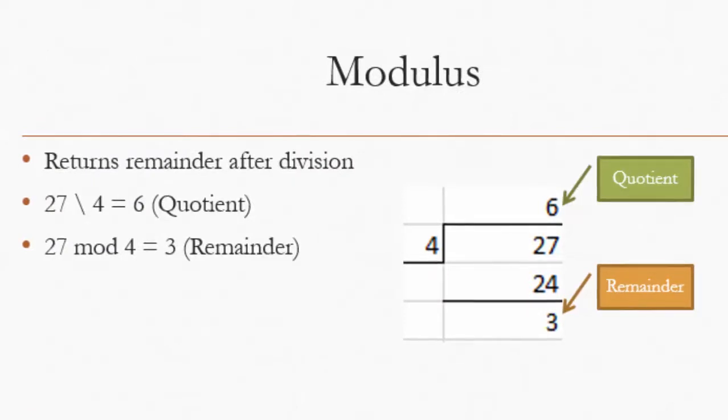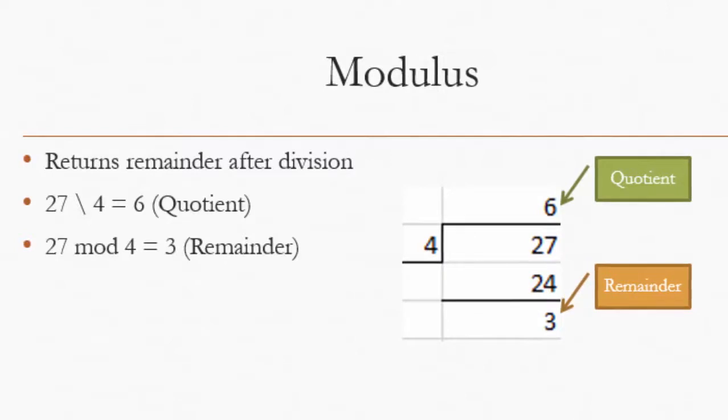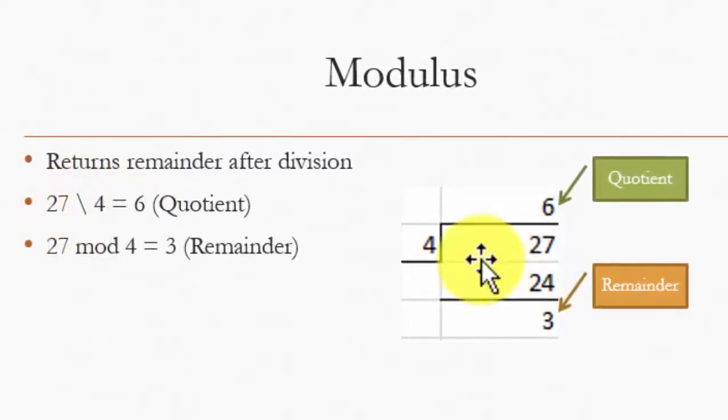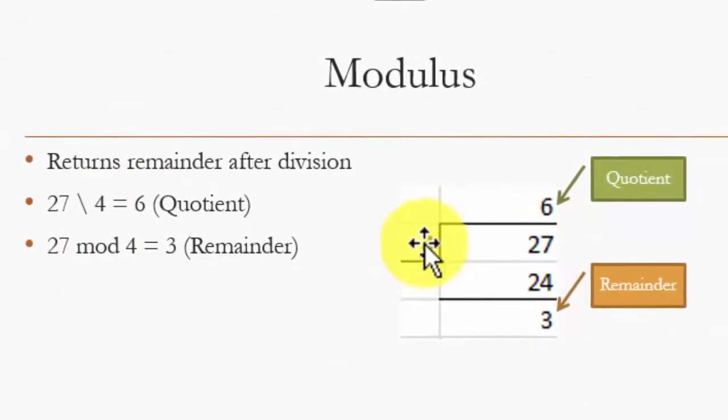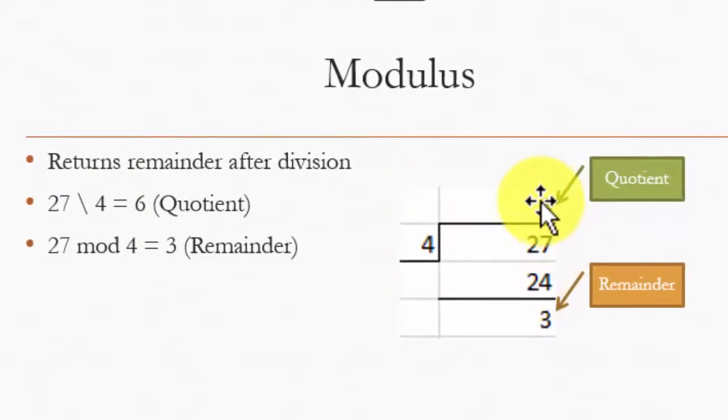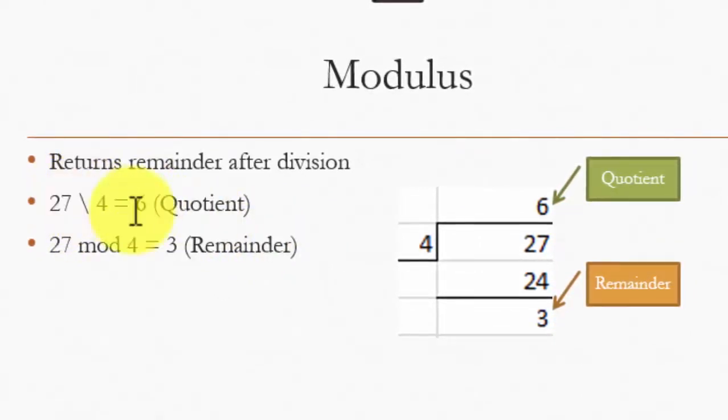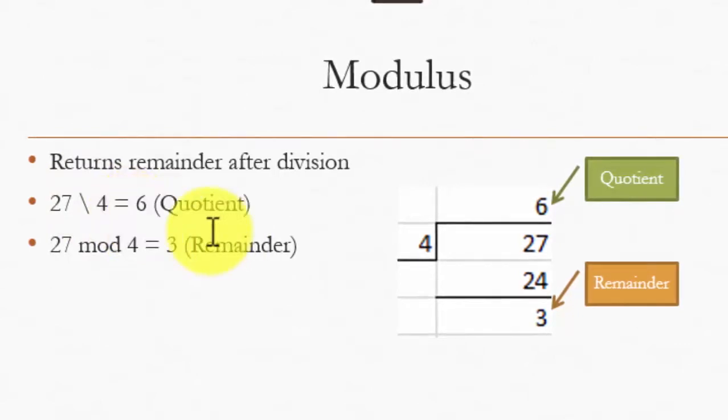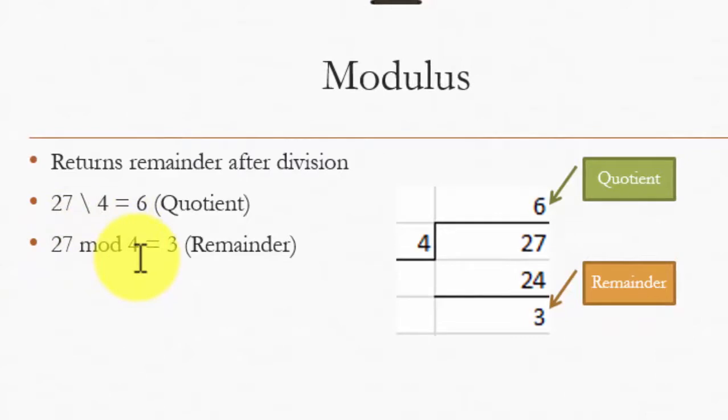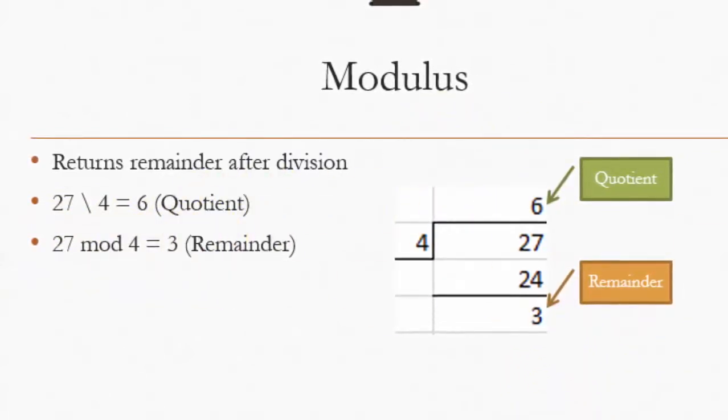Now here is the modulus. The modulus gives you the remainder after the division. So let's say the problem is 27 ÷ 4. It basically divides 27 by 4. 4 × 6 = 24, so 6 is the quotient. Since I use this division symbol, it does not give me 6.5, it just gives you the quotient. Now with the mod, when I do 27 mod 4, it still performs the division, but it gives me the remainder after the division.